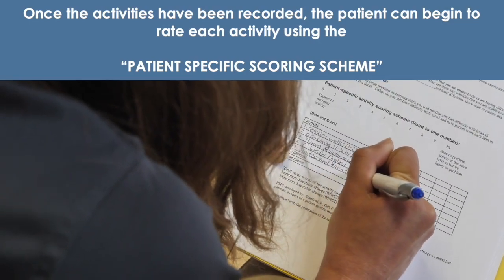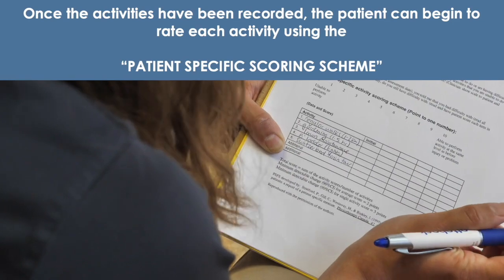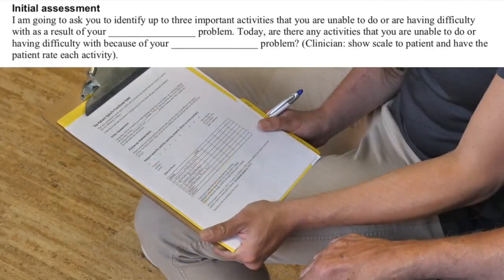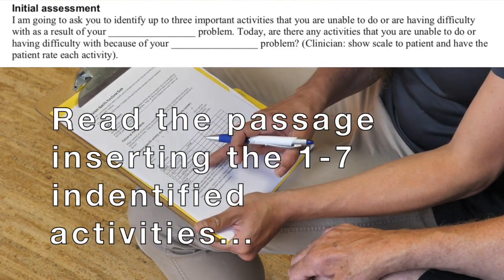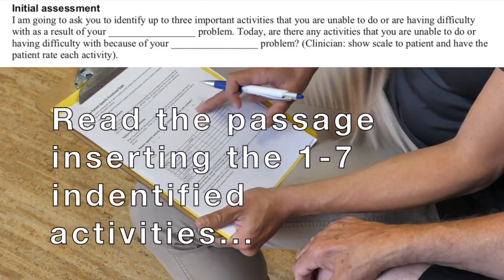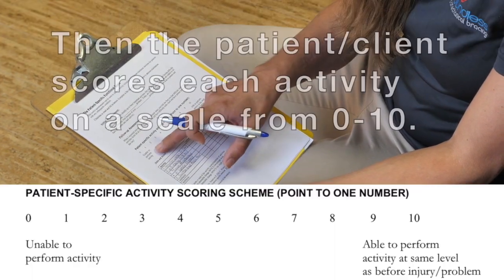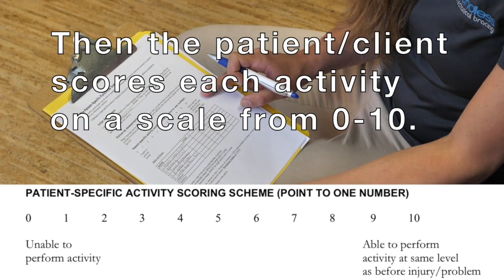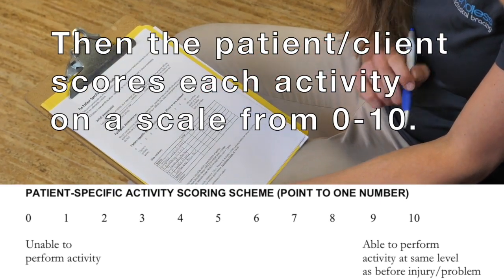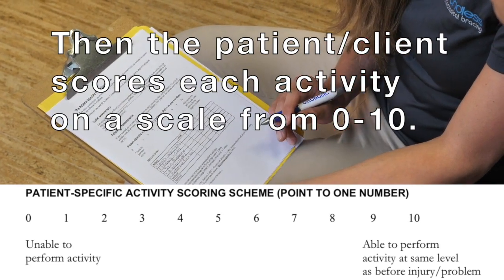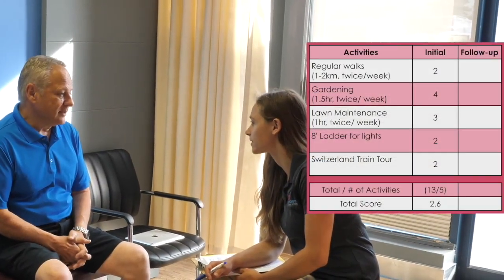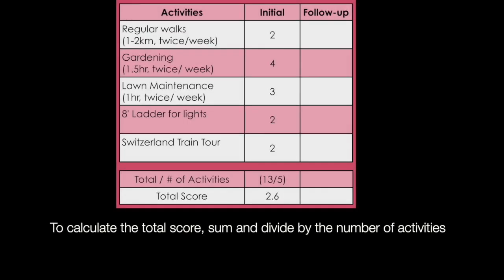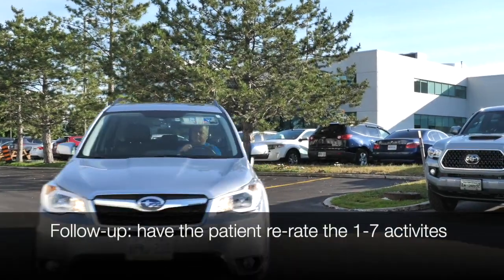Once the activities have been recorded, the patient can begin to rate each activity using the patient-specific scoring scheme. Read the passage, inserting the one to seven identified activities. Then the patient or client scores each activity on a scale from zero to ten. To calculate the total score, sum each of the activities and divide by the number of activities.